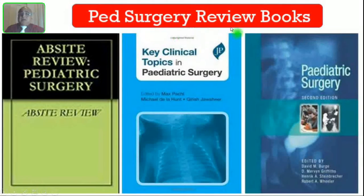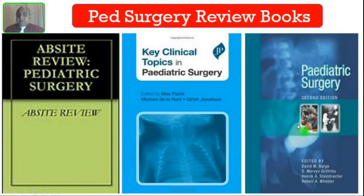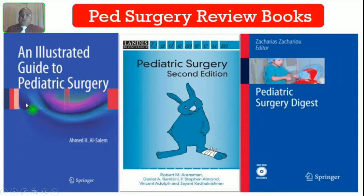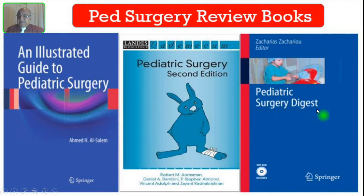Coming to the review books — these are all in outline format, not real textbooks. The best is the Upside Review on Pediatric Surgery, mainly for those appearing for the pediatric surgery board in the US. If you are appearing for the British degree, the FRCS in pediatric surgery in UK, you can read the Key Clinical Topics in Pediatric Surgery, second edition edited by David Buggy. There is also the Illustrated Guide to Pediatric Surgery — a very good book with lots of pictures. Pediatric Surgery by Aran Smag, a second edition in outline format, and the Pediatric Surgery Digest are also equally good.